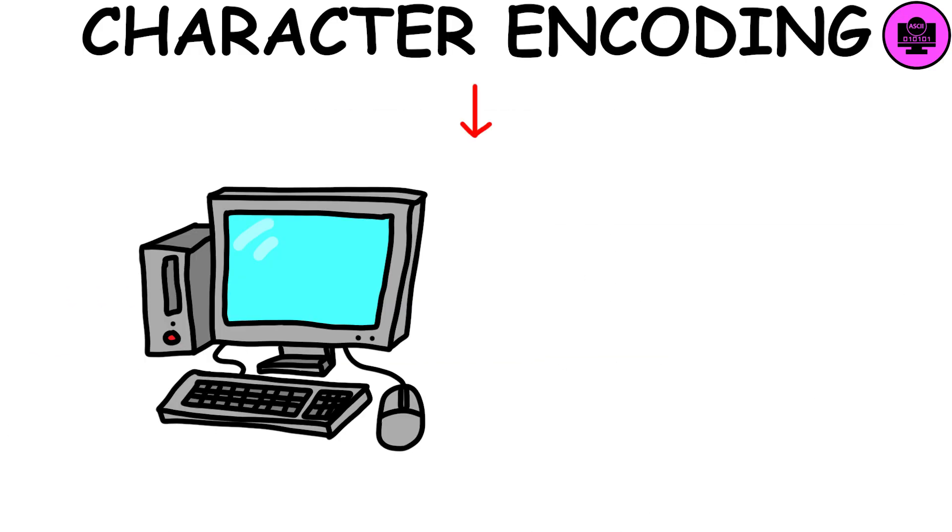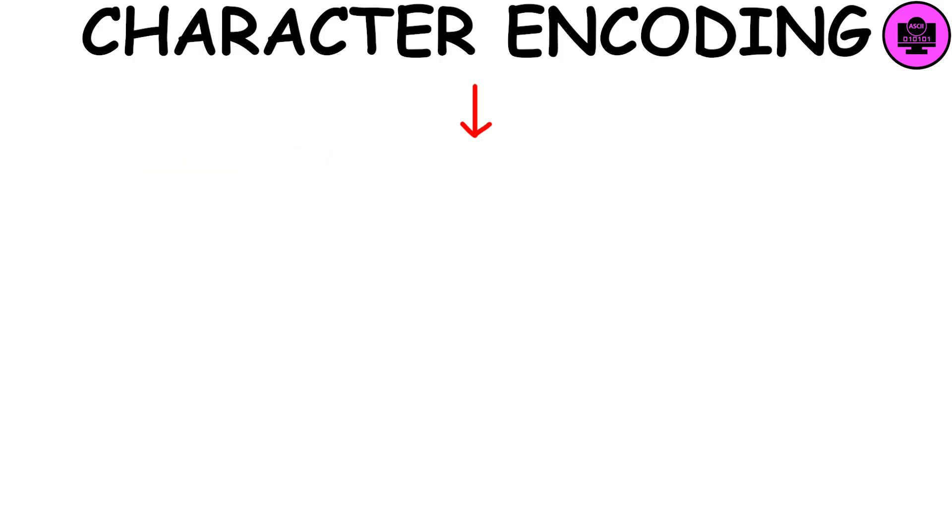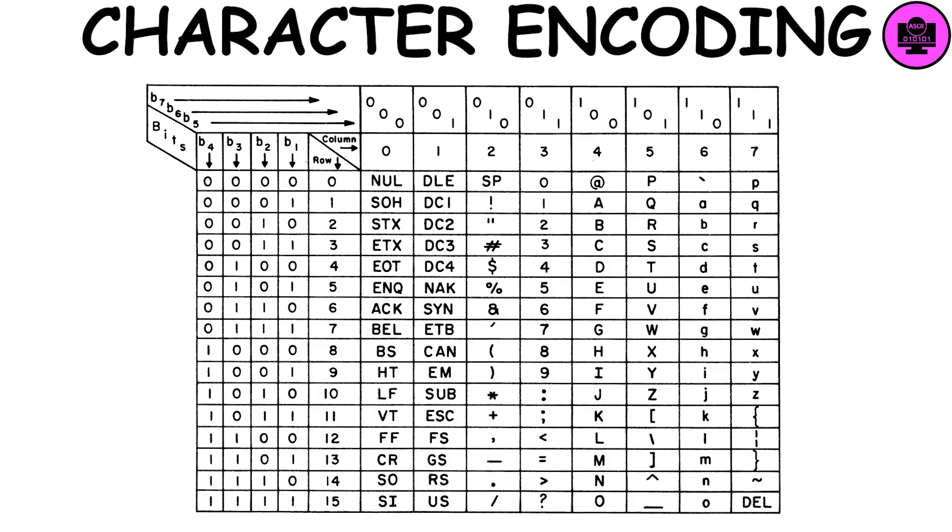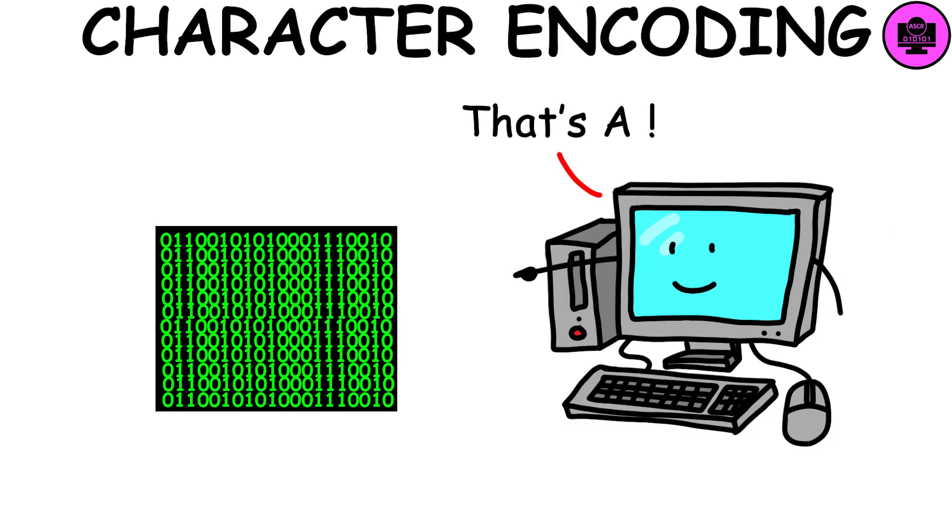Although computers understand binary numbers, they are not very useful to humans. Using a character encoding such as ASCII, a binary number can be assigned to each character. For example, when you type an A on the keyboard, it is translated into binary code that the computer recognizes as the letter A and displays it on the screen.